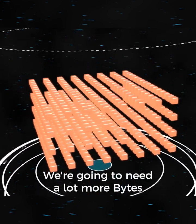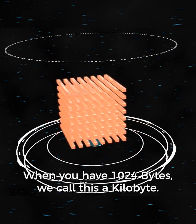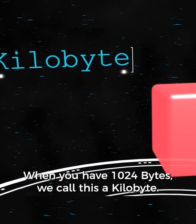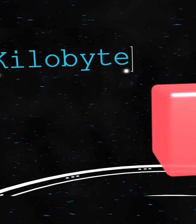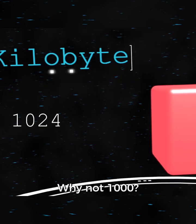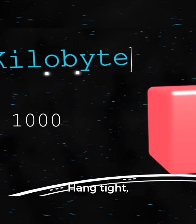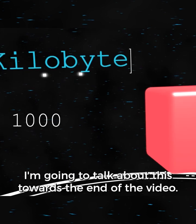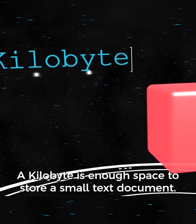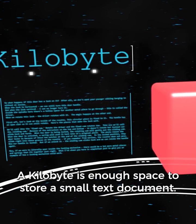We're going to need a lot more bytes to store something useful. When you have 1024 bytes, we call this a kilobyte. Now you might ask, why 1024? Why not 1000? Hang tight — I'm going to talk about this towards the end of the video. A kilobyte is enough space to store a small text document.